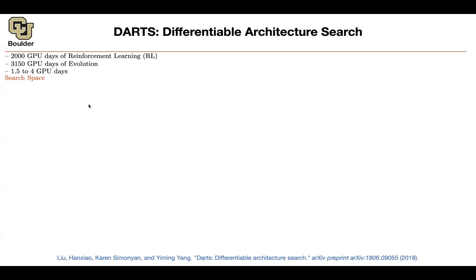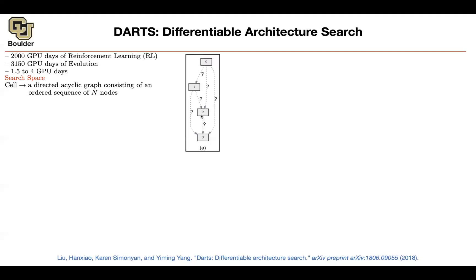This has to do with the search space and how you design your optimization. What is your search space? Let's think of a cell as your microstructure — think of it as a directed acyclic graph, a graph that doesn't have any cycles. It has a bunch of ordered nodes: 0, 1, 2, 3. These are the nodes in your cell; that's the input and that's the output of the cell. Then you want to know what operations to do — those are the question marks on the edges.